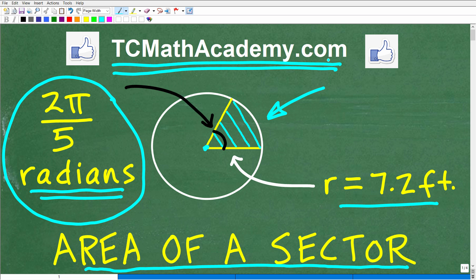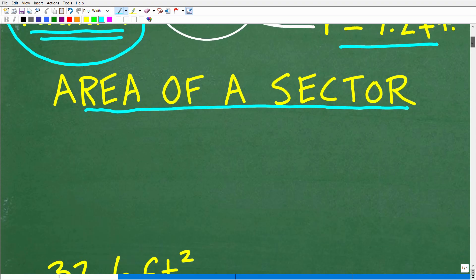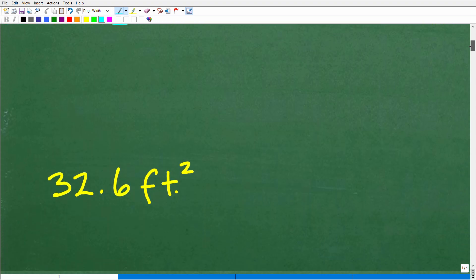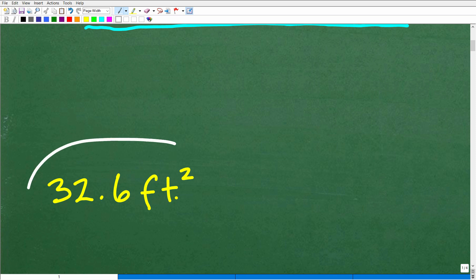And if this video helps you out, don't forget to like and subscribe, as that definitely helps me out. All right, so again, feel free to use a calculator. There's a couple of formulas involved, but nothing overly complex. So let's go ahead and take a look at the answer right now. The area of that sector would be approximately 32.6 feet squared.